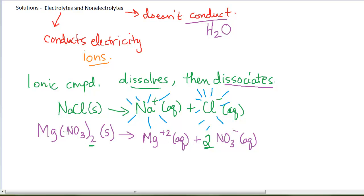There's a stoichiometry involved. Every 1 magnesium nitrate gives me 1 magnesium ion and 2 nitrate ions.